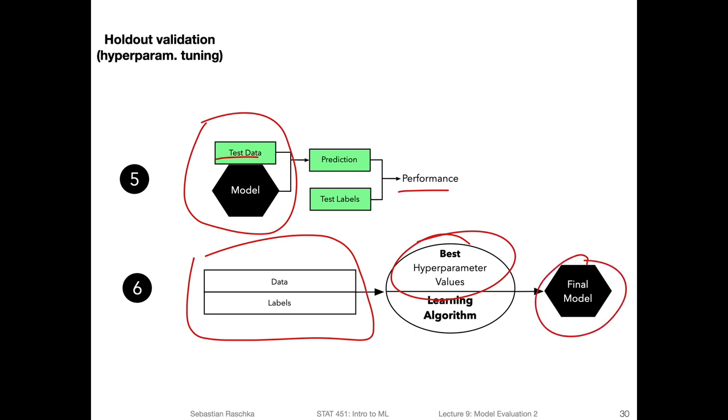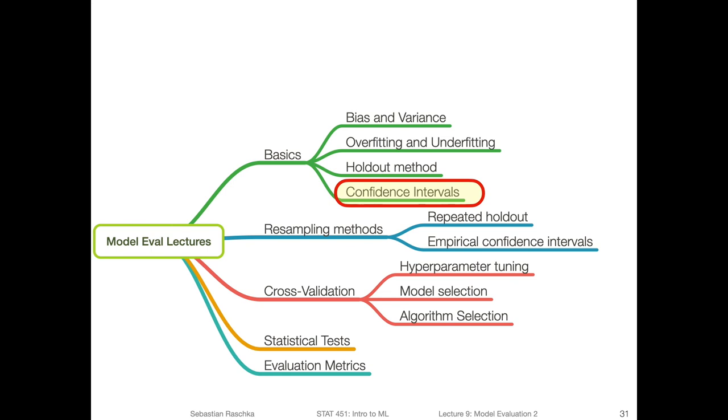Usually the final model would be better than the model here from step five, but we don't know because we now don't have a test set anymore to evaluate it. But in practice, usually a model can only improve the more data we have, given that there's no weird outlier in the data. So this was the holdout method for model selection. We checked off all these topics. This was actually from the last lecture. In this lecture, we talked about the holdout method. And in the next video, we are going to talk about confidence intervals.